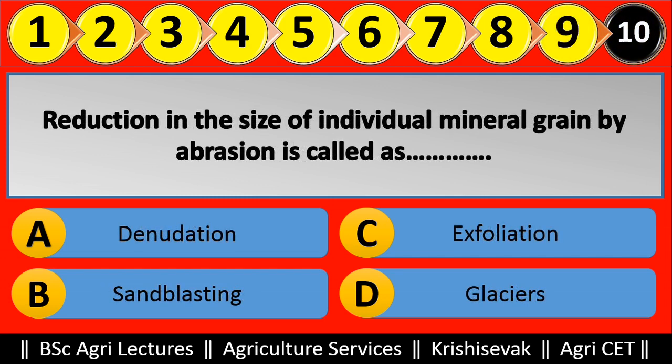Question 10: Reduction in the size of individual mineral grain by abrasion is called blank. Options are: (a) Denudation, (b) Sandblasting, (c) Exfoliation, (d) Glaciers. Right answer is Sandblasting, option B.